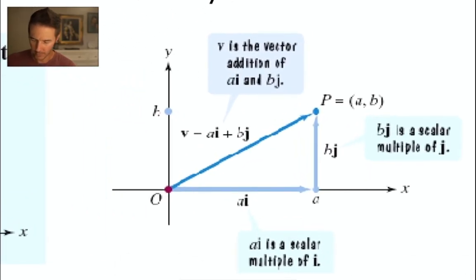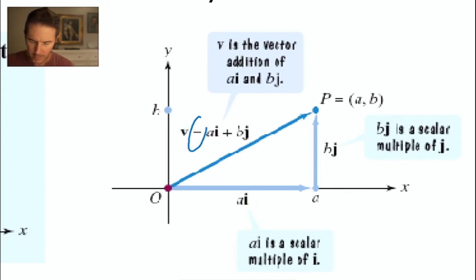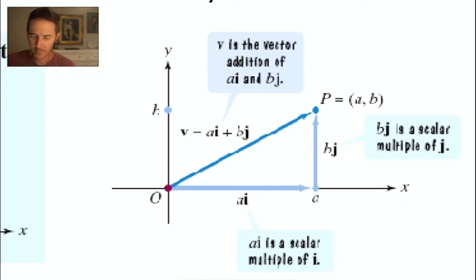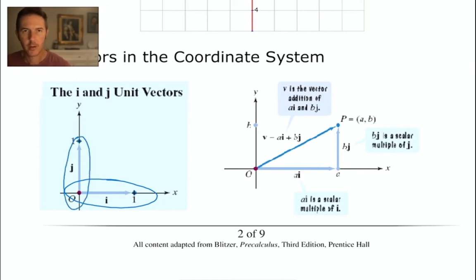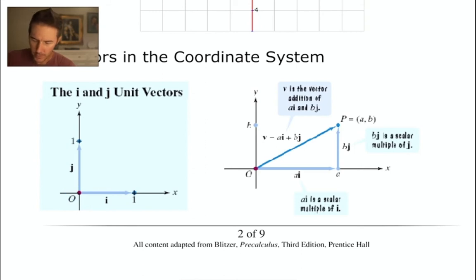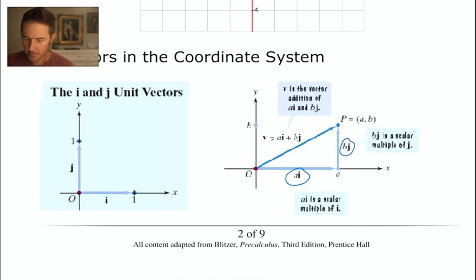The i and j unit vectors are the building blocks — the atoms — of the vector world. Every vector V equals a·i plus b·j. The i vector is a unit vector in the positive horizontal direction; the j unit vector has magnitude 1 and aims in the positive vertical direction. So vector V is made up of 'a' i-vectors and 'b' j-vectors.